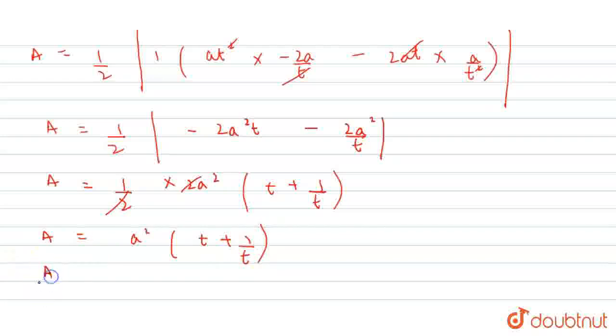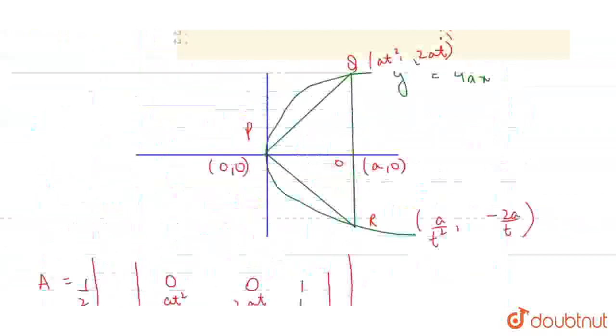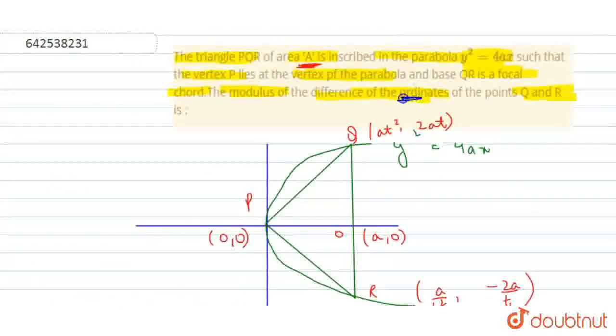We can write in this form: A/A equals A into (T + 1/T). The question says find the modulus difference. We find the modulus difference of the ordinates.